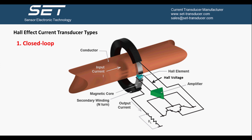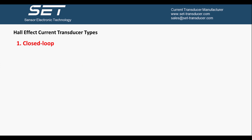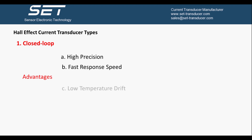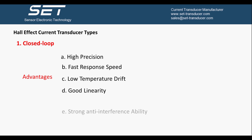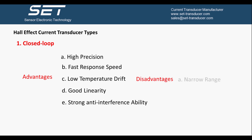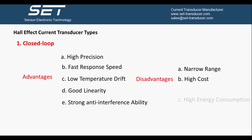When reaching this equilibrium state, the amplifier output current can represent the primary current. The advantages of the closed loop Hall current sensor are high precision, fast response speed, low temperature drift, good linearity, and strong anti-interference ability. The disadvantage is that the measurement range is narrow, and both cost and energy consumption are high.